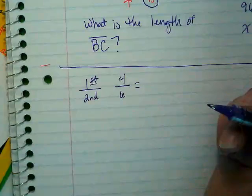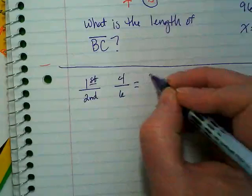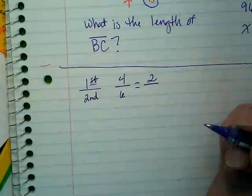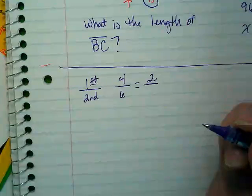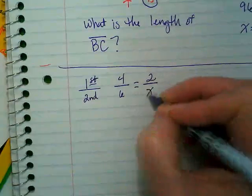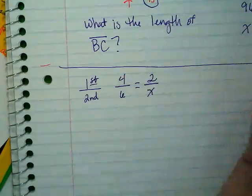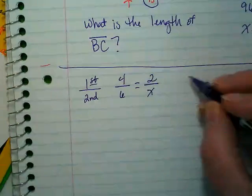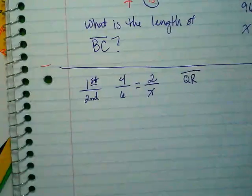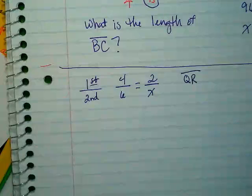And then KJ is two centimeters. What corresponds with KJ? RQ. And RQ is where the X is. So we're trying to find line, actually it would be QR if we've read it in the right order, right? QRS.